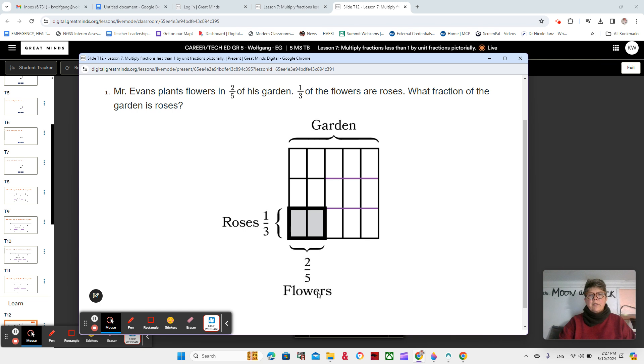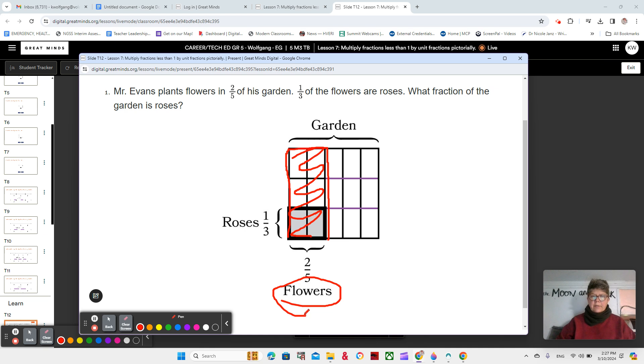And there we go. So, two fifths of the garden is flowers. And one third of the flowers are roses. So, two fifths of the garden. Let's kind of do a little outline of two fifths of the garden. Right? Two parts out of five. We see that there's one, two, three, four, five parts. So, these are all flowers in the garden. In fact, we'll kind of color that in. These are all flowers. Right?